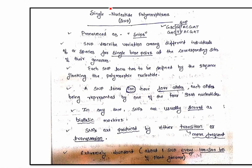Coming to our first slide: single nucleotide polymorphism. It is pronounced as SNPs, just like RAPD marker is pronounced as 'rapid.' SNP describes variation among different individuals of a species for a single base pair at the corresponding site of their genome. You can see that all genomes are the same except one position where G is replaced by T — a substitution of one base pair by another. This is called single nucleotide polymorphism.